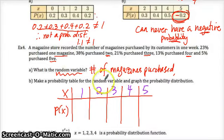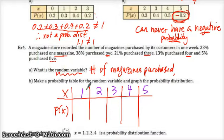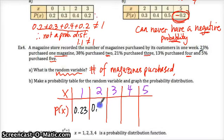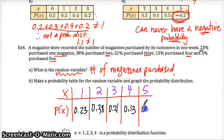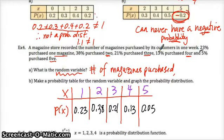It says: make a probability table for the random variable and graph the probability distribution. Here is my table. We have one magazine, two, three, four, five. The probability for one magazine is 0.23, for two magazines 0.38, for three magazines 0.21, for four magazines 0.13, and five magazines is 0.05. You should do a quick check — do they add up to one? They should, especially when we gave you that information.